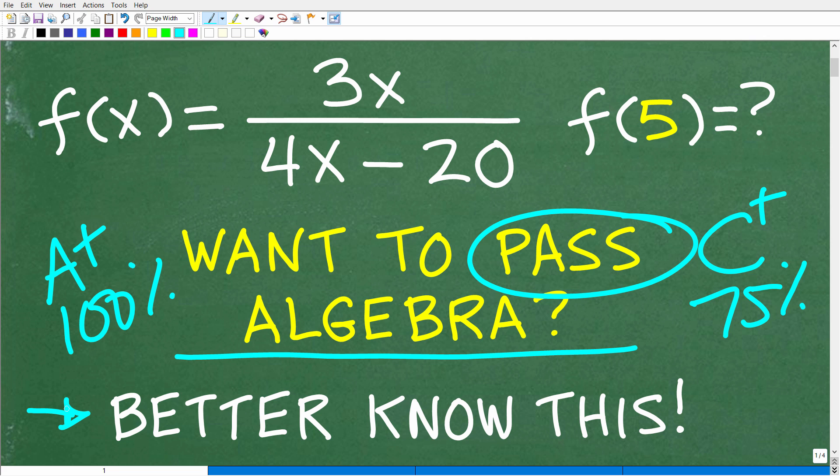And that is functions. So let's see how much you know about functions by taking a look at this question right here. So we have this function f of x is equal to 3x over 4x minus 20. And we want to figure out what happens when we evaluate this function for 5. So when we take this function and we evaluate it for 5, what is the result?